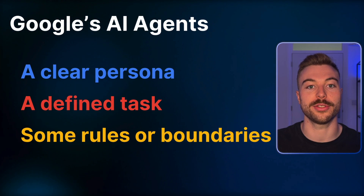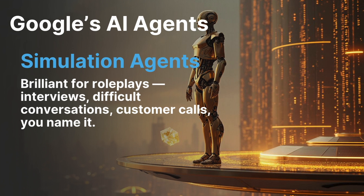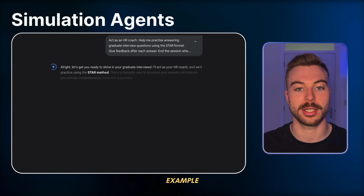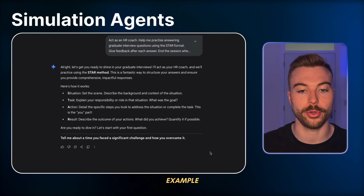Now we're getting really into the weeds: AI agents. Google talks about agents as AI setups with a clear persona, defined tasks and some rules or boundaries. The first type is simulation agents - brilliant for role play, interviews, difficult conversations, customer calls. For example: 'Act as an HR coach, help me practice answering graduate interview questions using the STAR format, give me feedback on each answer, and end the session when I say jazz hands.' We're giving it a really clear instruction - it assumes this role, persona and situation all the way through until we give it a specific command to stop. It works so well because it's interactive and tailored to you - you're not just generating content, you're having a conversation with a coach, mentor or mock customer.